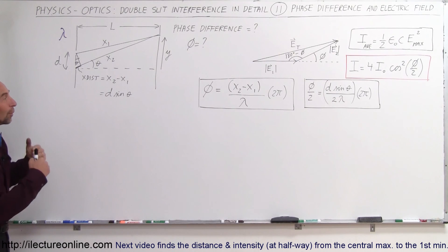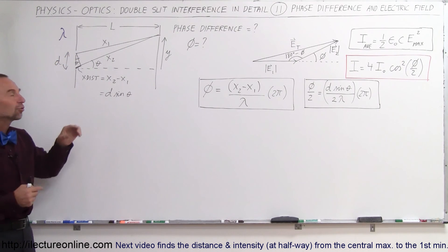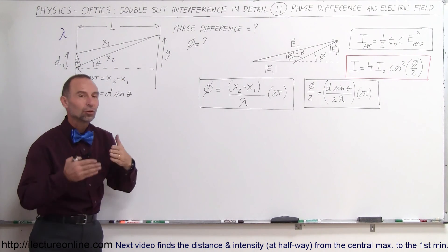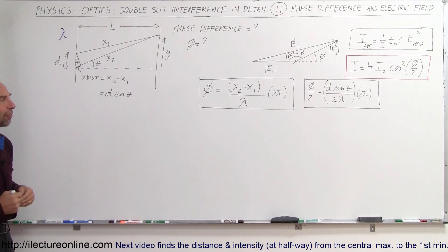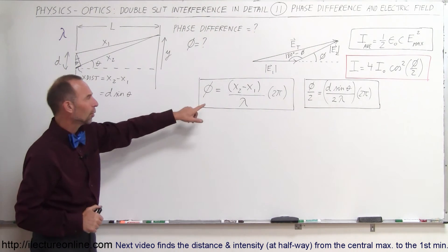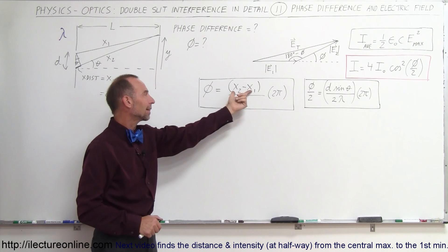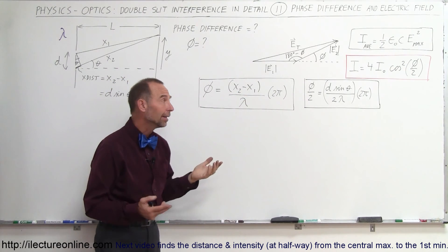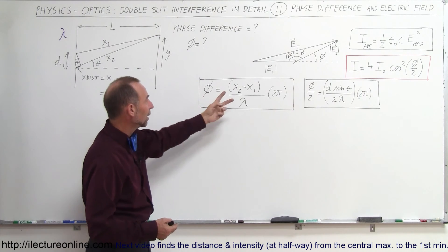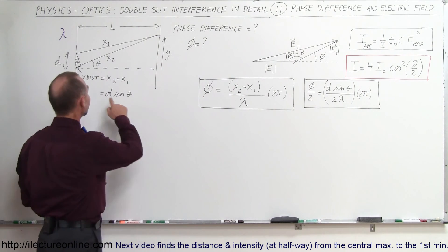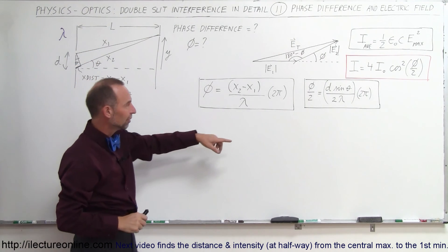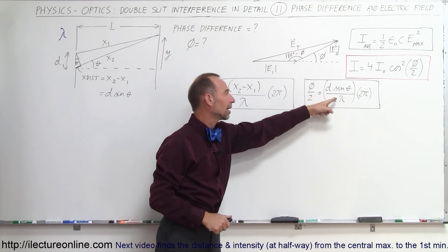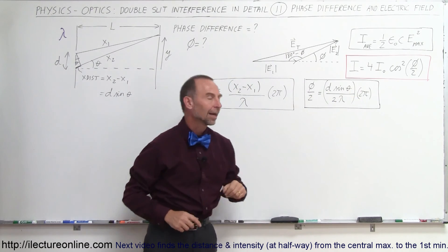Welcome to iLectronLine. Now we're going to relate the phase difference to the electric field of each of the individual waves traveling from the double slit to the point where they meet, where there will be either constructive or destructive interference based upon their phase difference. The phase difference can be defined as the path length difference divided by the wavelength times 2π, and φ/2 equals d sinθ divided by 2λ times 2π.